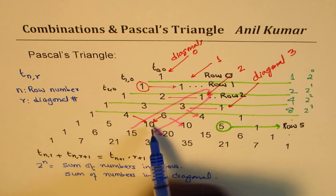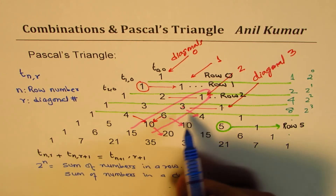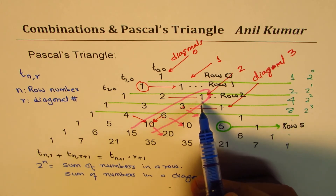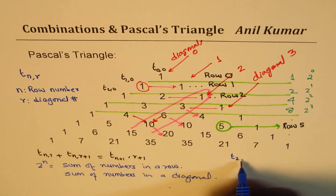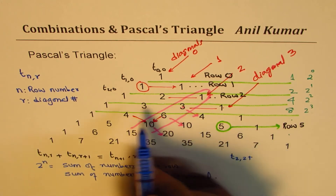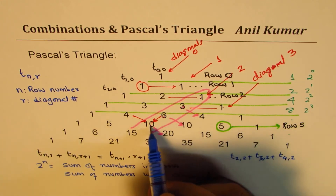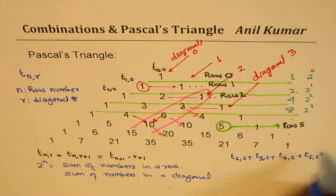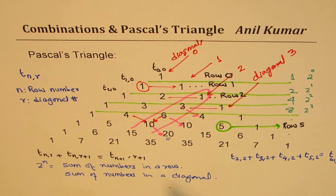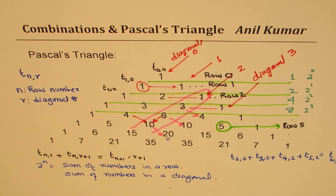Let me show you what I mean. This number here is T(2,2) — the second row and second diagonal. T(2,2) plus T(3,2) plus T(4,2) plus T(5,2) equals T(6,3). So you can get the sum of all numbers in a diagonal directly from Pascal's triangle.